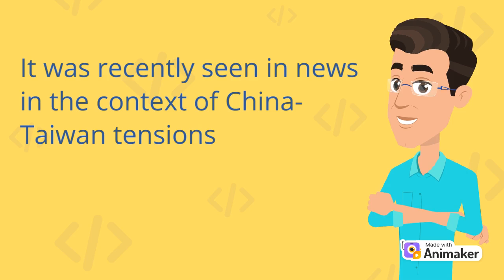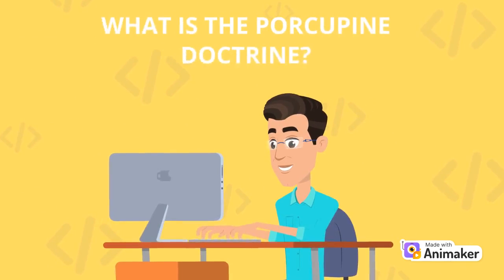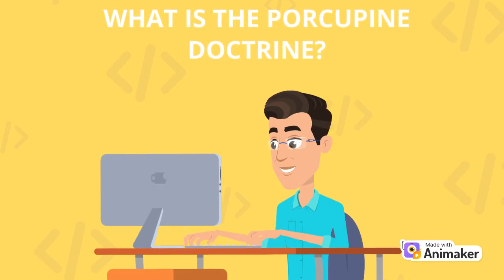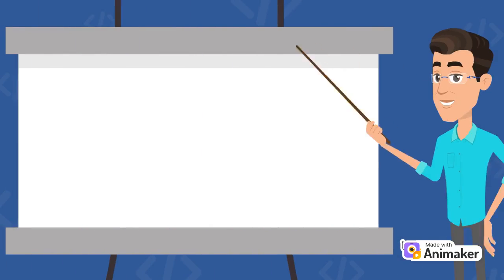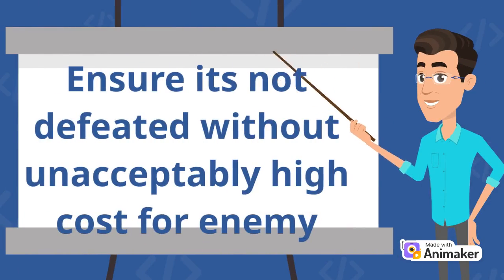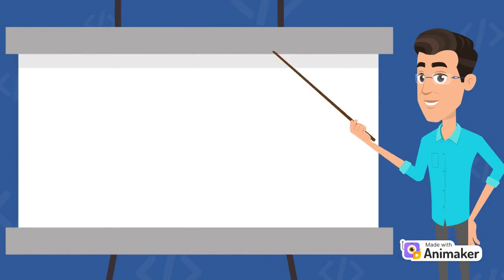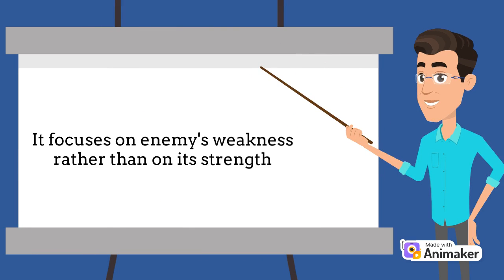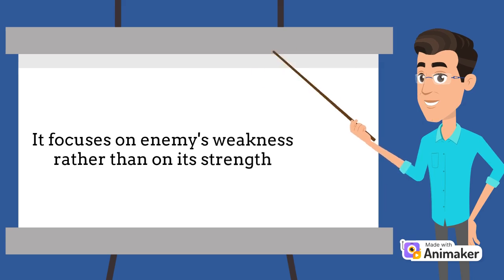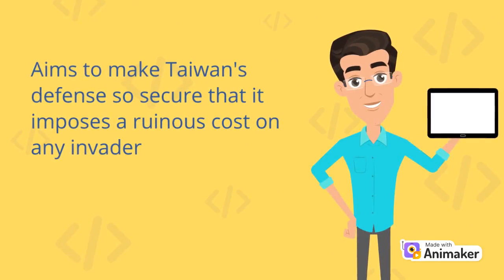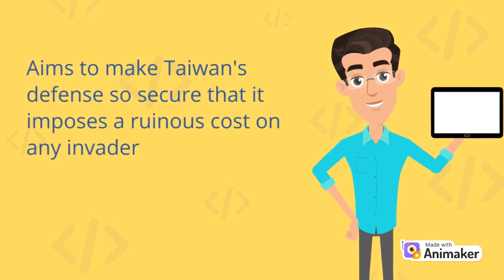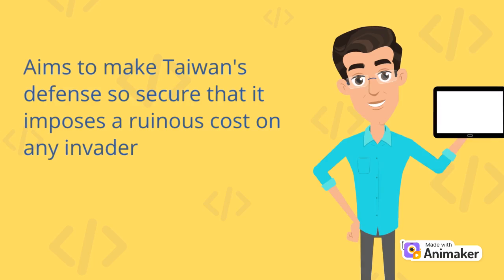The porcupine doctrine emphasizes that the cost of invading and defeating Taiwan will be very high. It focuses on targeting the enemy country's weakness rather than taking on the country's strength. The aim of the doctrine is to make Taiwan's defenses so good that it will impose a ruinous cost on the country which is invading it.